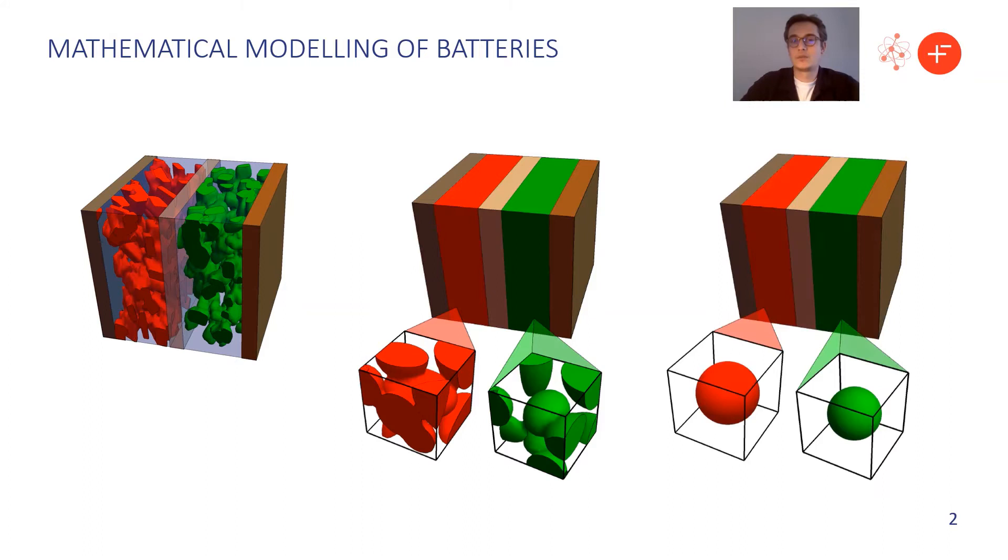Now from there typically we make some simplification about the microstructure. In particular we often say that it's represented by spherical particles. You can have other options here, like assuming a distribution of spherical particles or picking a different shape entirely. But for the purposes of this work, the image on the right represents the starting point for our modeling.